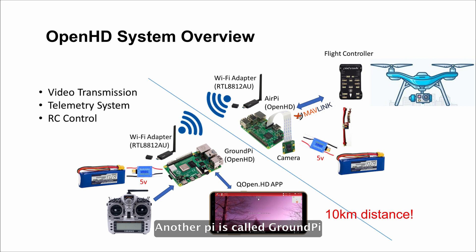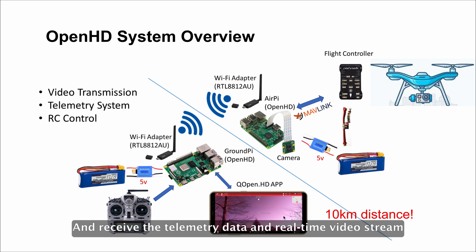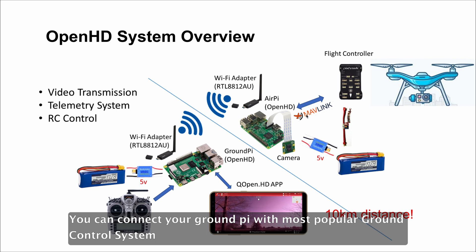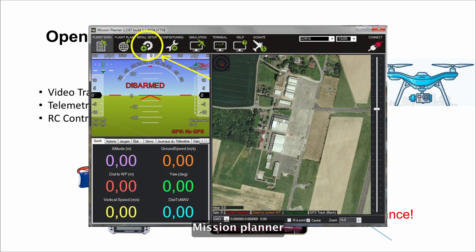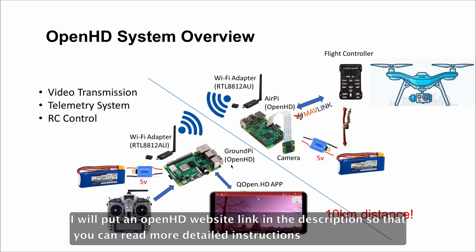Another Pi is called GroundPi, which transmits RC signal to your drone and receives the telemetry data and real-time video stream. You can connect your GroundPi with most popular ground control systems like QGroundControl, Mission Planner, and of course their QOpenHD app. I will put an OpenHD website link in the description so that you can read more detailed instructions.